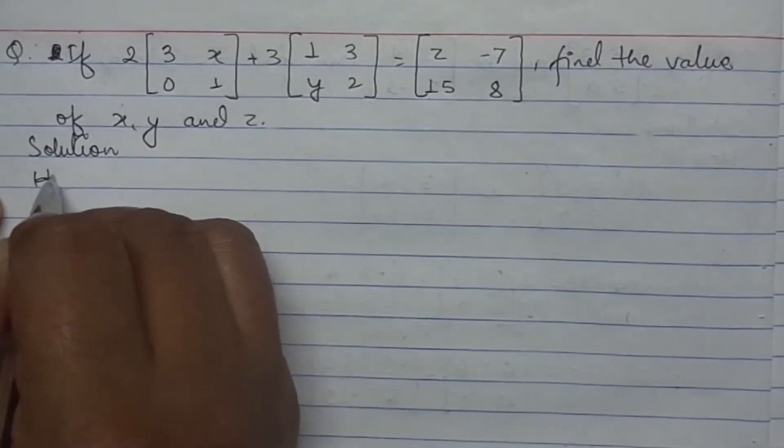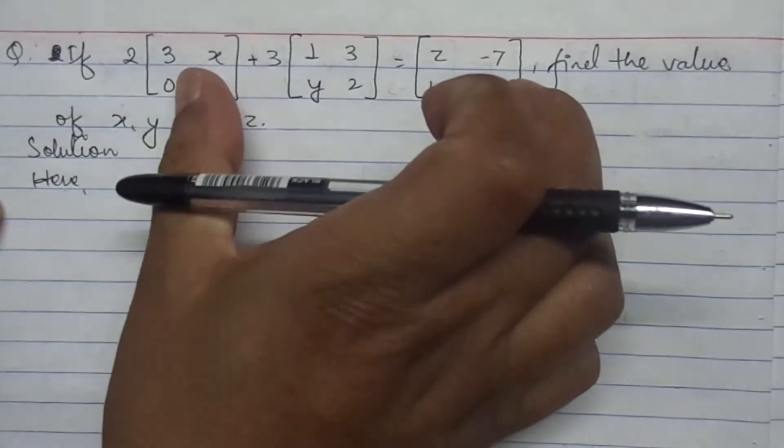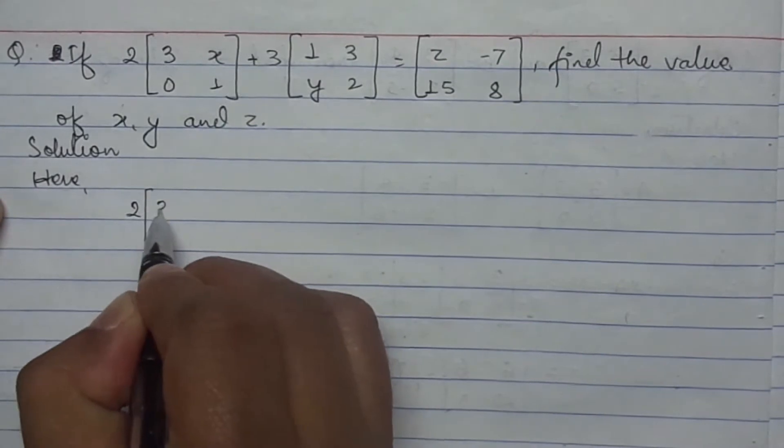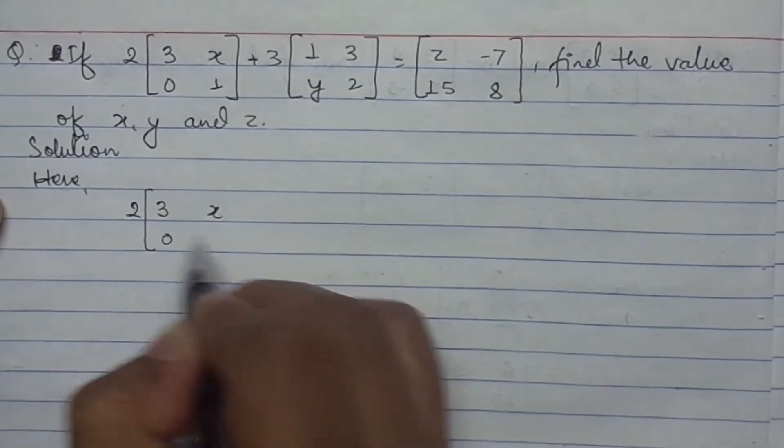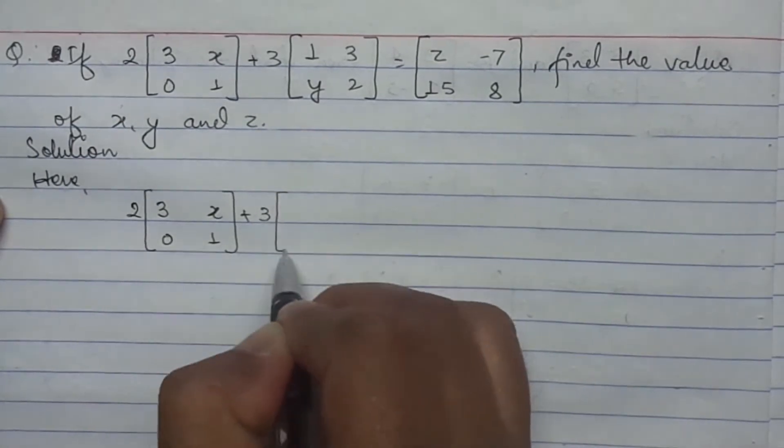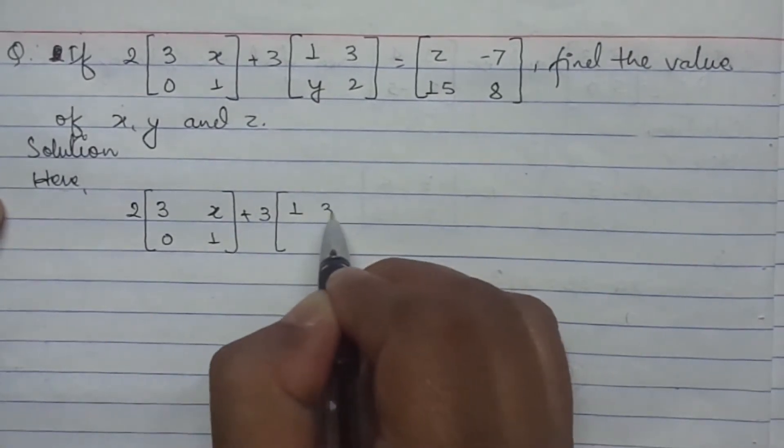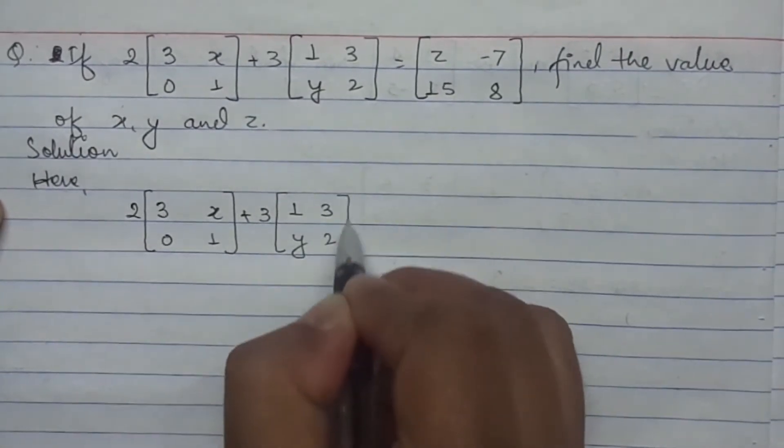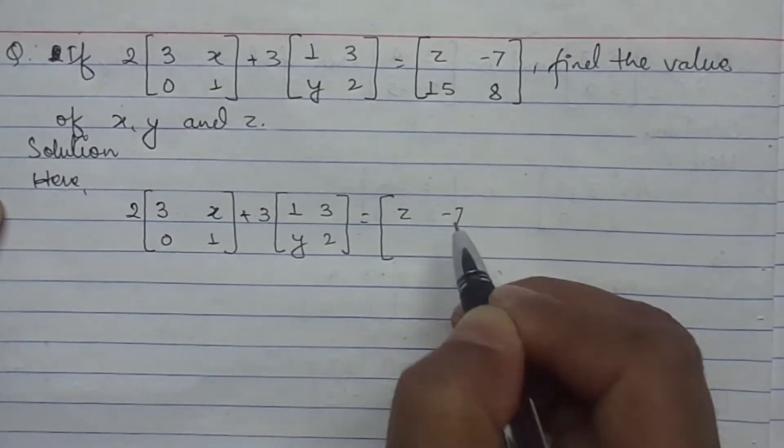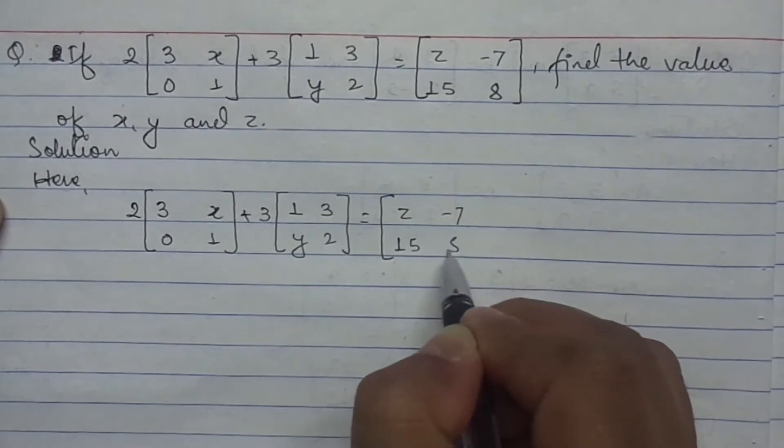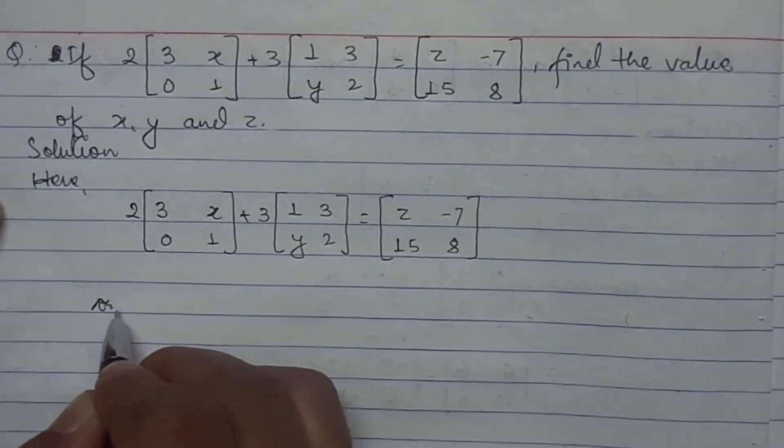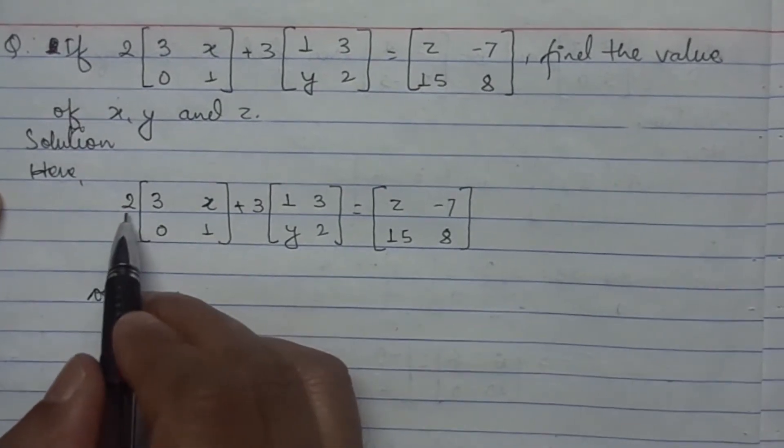Here what is the question we copy that question. The question is 2 times the matrix [3, x; 0, 1] plus 3 times the matrix [1, 3; y, 2] equals [z, -7; 15, 8]. See here 2 is the scalar term.